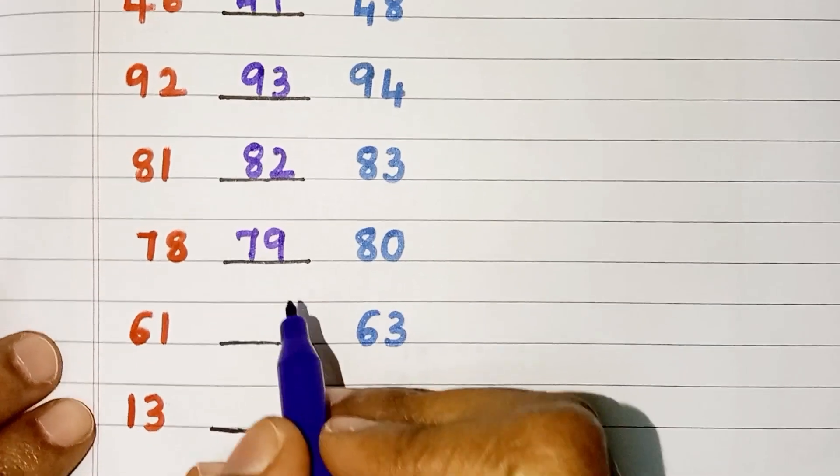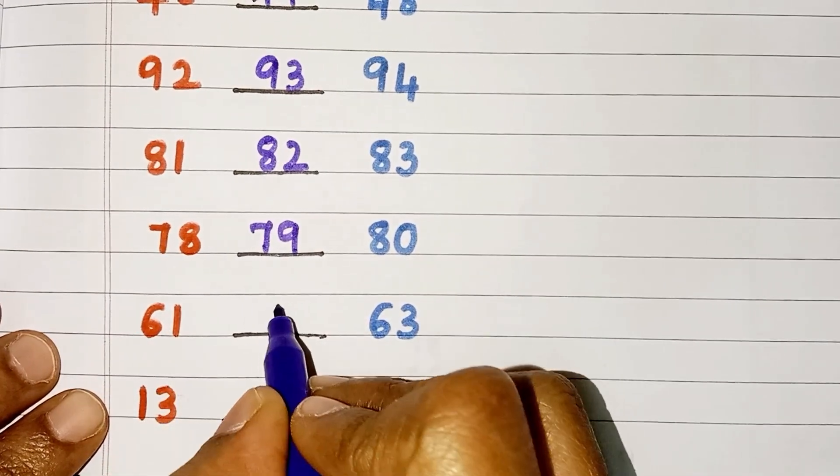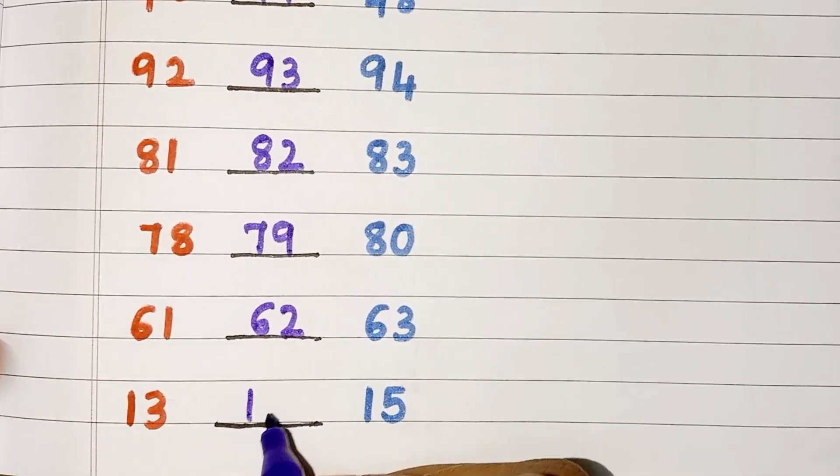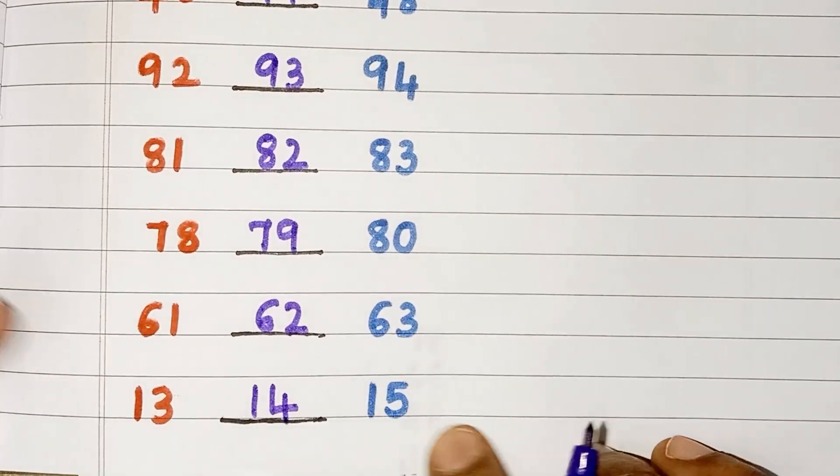78, 79, 80. Number 62 comes between 61 and 63. 14 comes between 13 and 15.